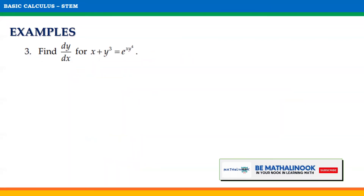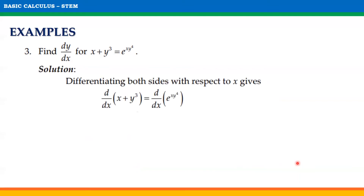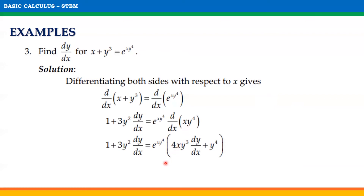Let us have the third example. Find dy/dx for x + y³ = e^(xy⁴). Differentiating both sides with respect to x gives us d/dx of x + y³ equals d/dx of e^(xy⁴). The derivative of x + y³ is 1 + 3y² dy/dx, and the derivative of e^(xy⁴) is e^(xy⁴) times d/dx of xy⁴, which simplifies to e^(xy⁴) times 4xy³ dy/dx + y⁴.